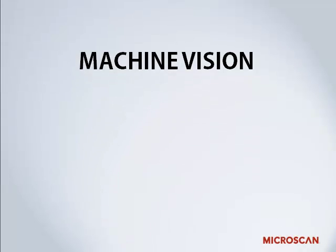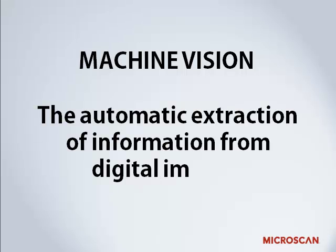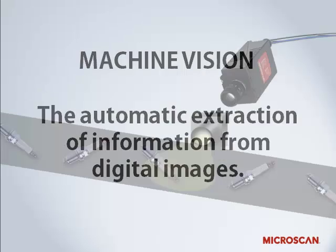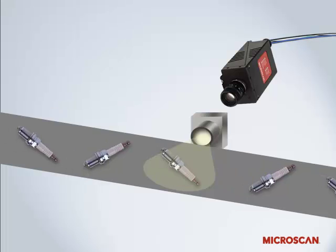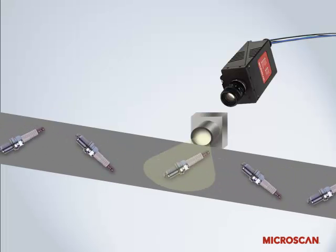Let's get started with a definition of machine vision. Machine vision is defined as the automatic extraction of information from digital images. Let's look at a very basic breakdown of a typical machine vision process.